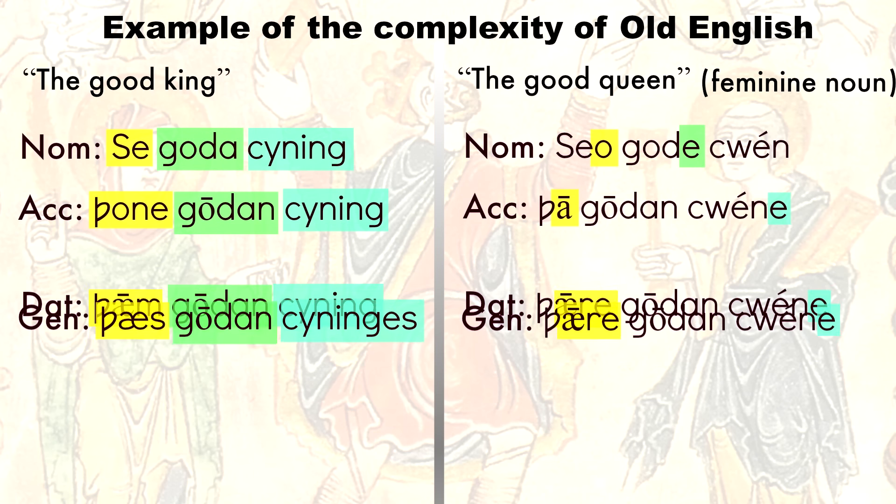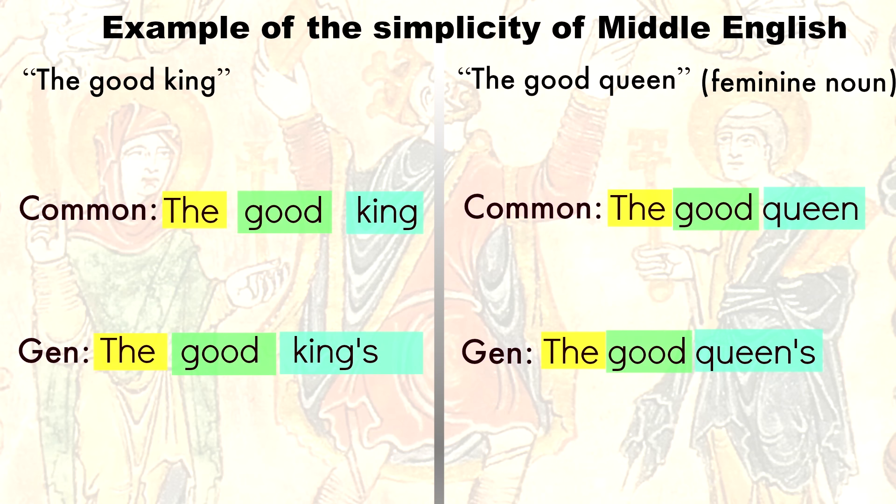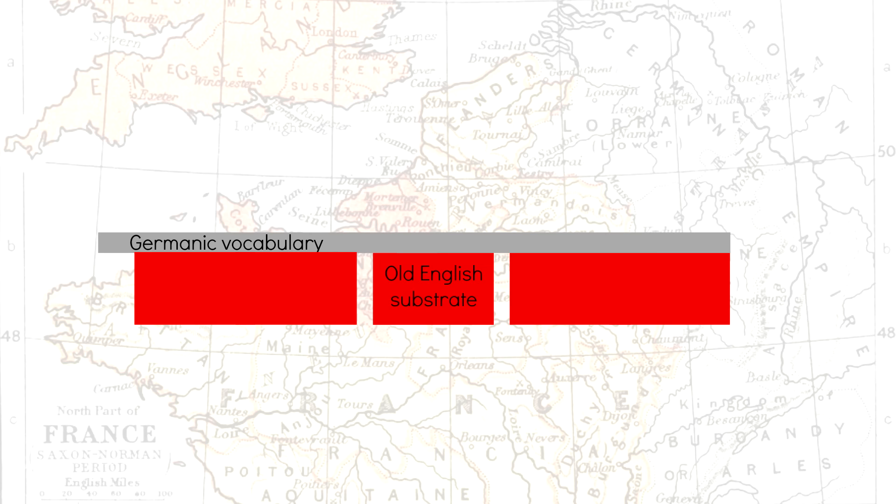By the Middle English period, most of these forms had disappeared or merged together. So now we just have a genitive case and the others form a common case. This is the type of simplification that happens when Creoles arise.